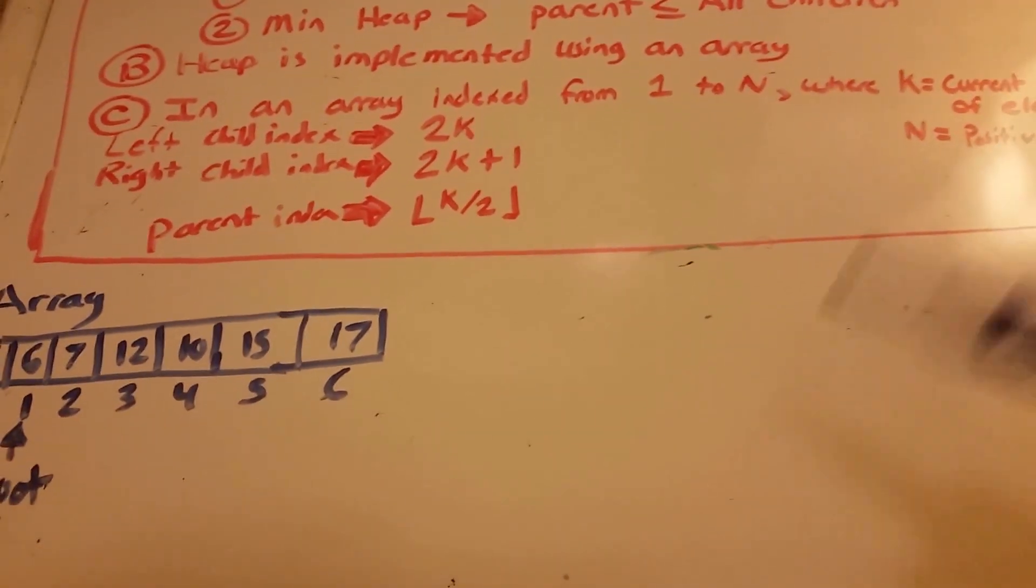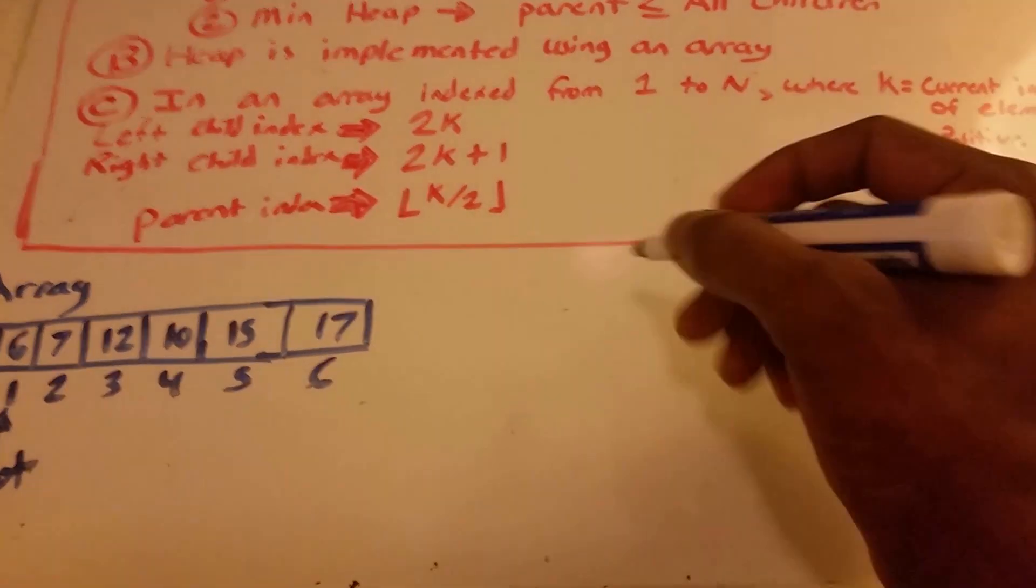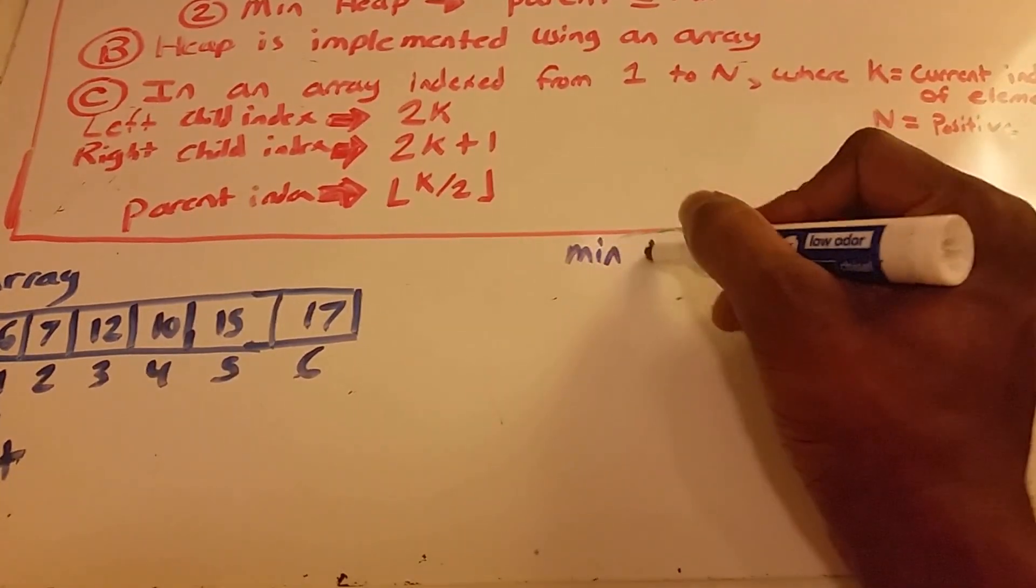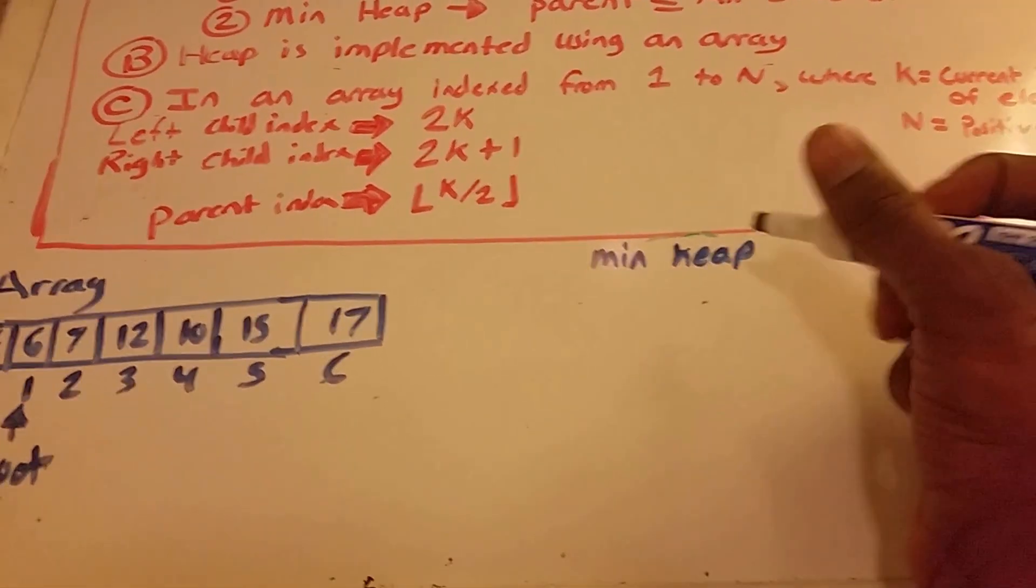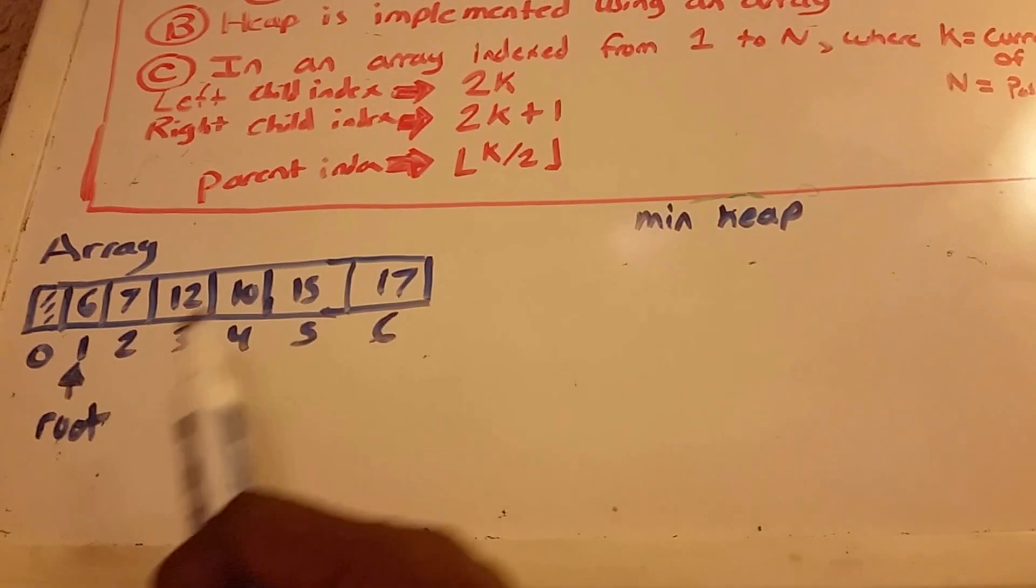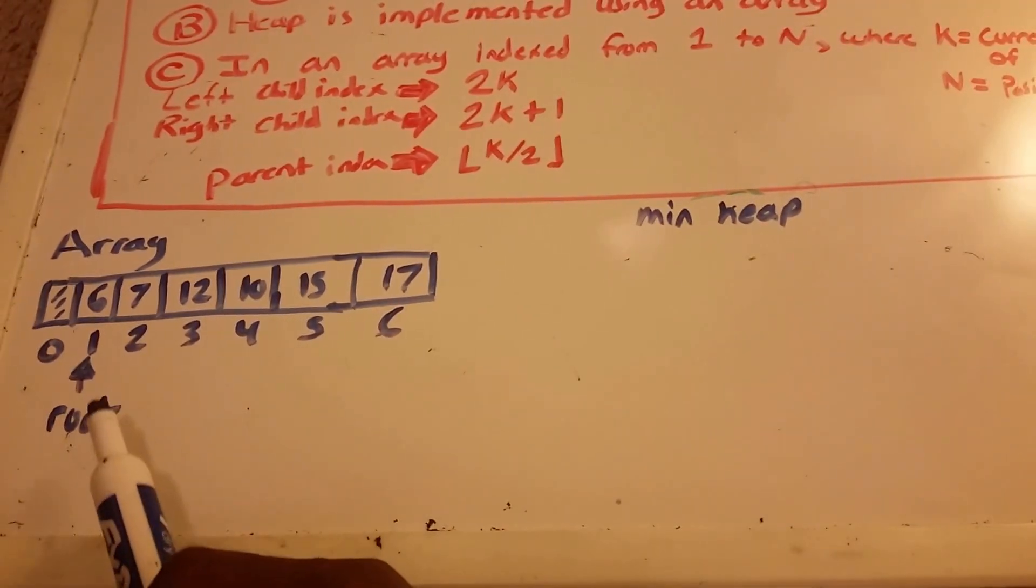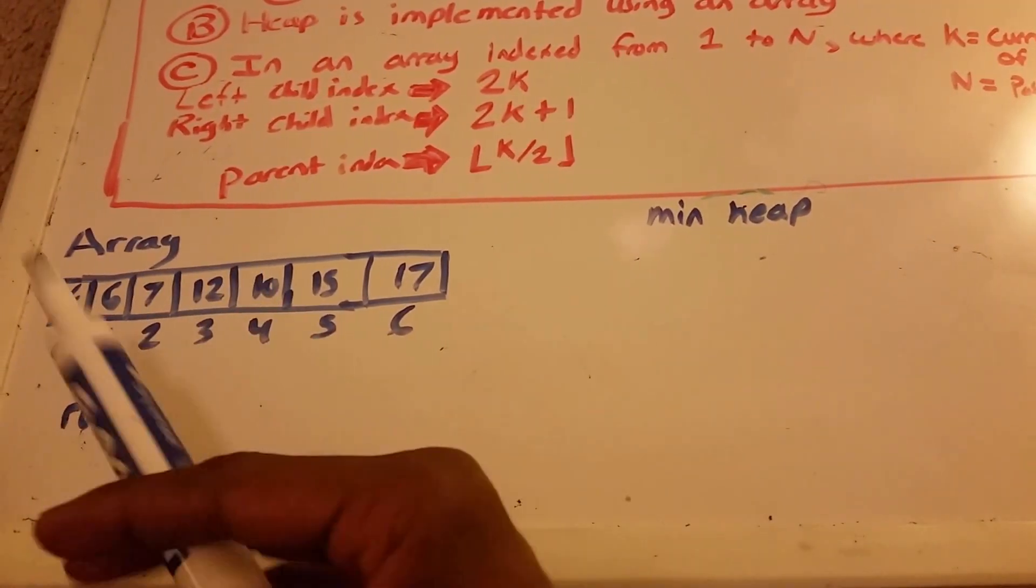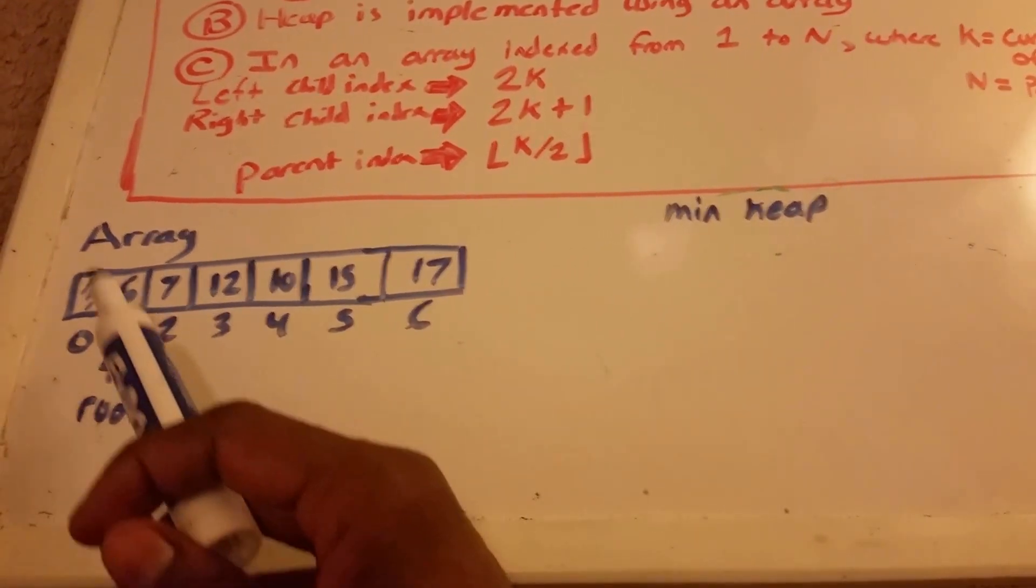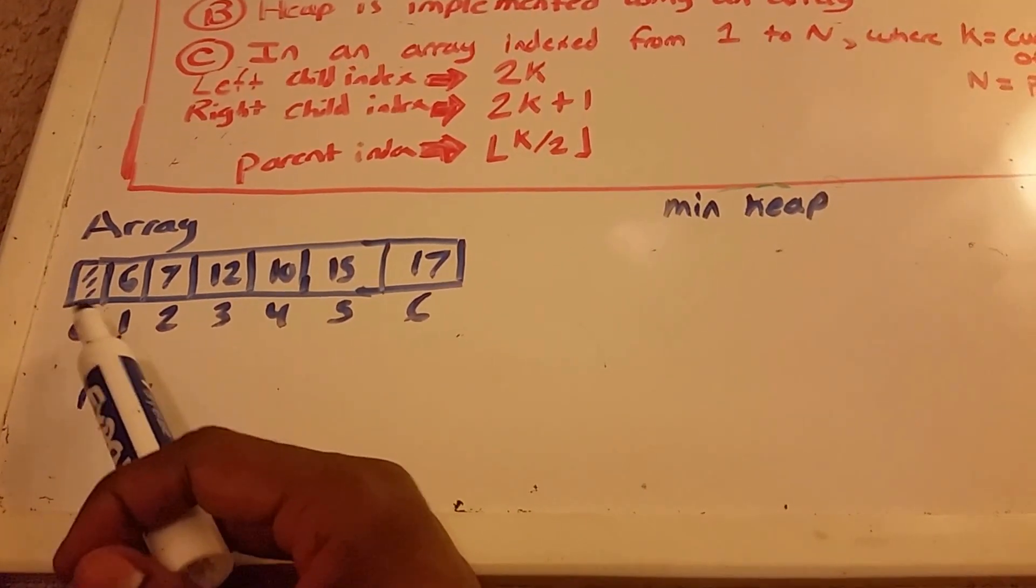Here we have an array. We're going to create a minimum heap. You can see that it starts from 1 to 6. Because it's a heap, the root is going to be at index 1, and there's nothing in index 0.